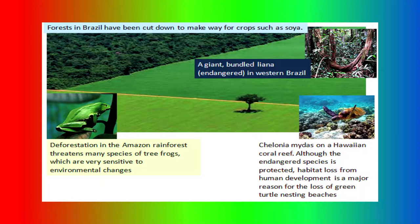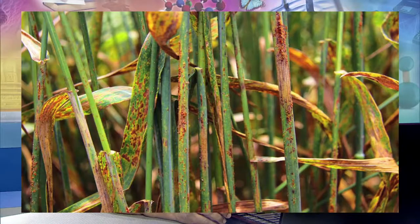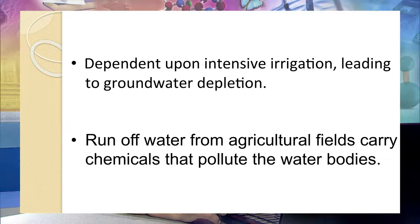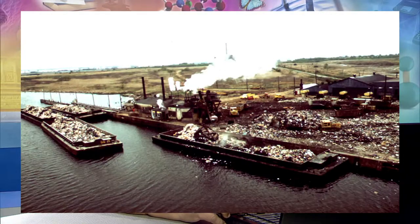A tree frog species, which is very sensitive to environmental changes, is also listed as a threatened species. A chelonia — a green turtle — found in Hawaiian coral reefs, is also an endangered species whose habitat loss is endangering its survival. High yielding varieties are more susceptible to diseases like smut in sugarcane, maize, and sorghum. Such ecosystems are dependent upon intensive irrigation, leading to groundwater depletion, and runoff water from agricultural fields adds chemicals and pollutes water bodies.